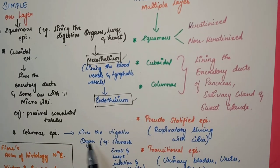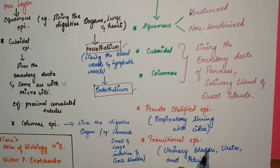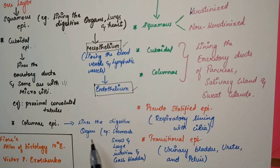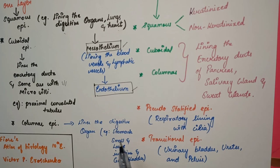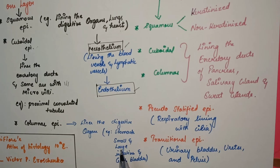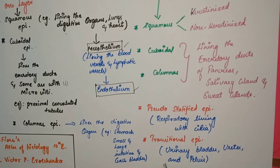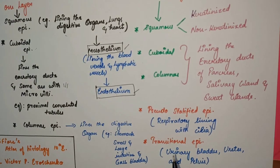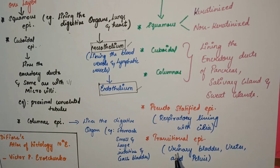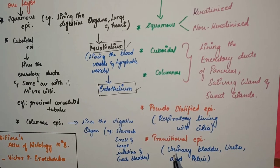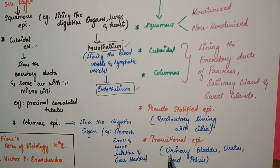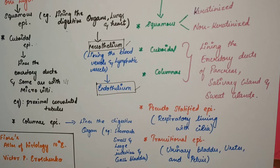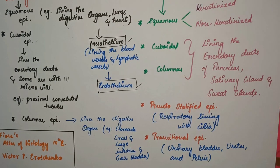The third type is columnar epithelium, which lines the digestive organs such as the stomach, small and large intestine, and the gall bladder. So under simple epithelium we have squamous, cuboidal, and columnar epithelium, each lining particular organs.